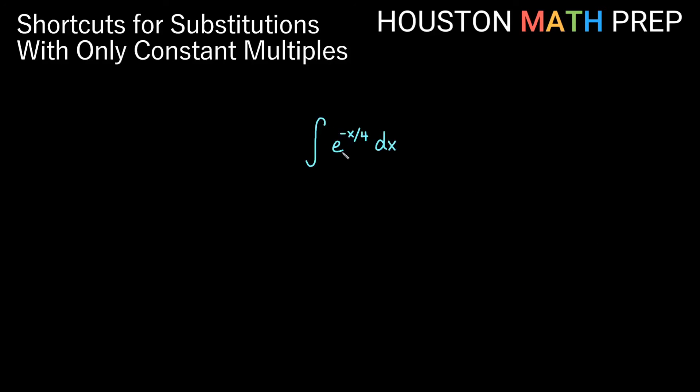Last one here we have again an exponential. So we have the integral of e to the negative x over 4. We want to sort of see this exponent as negative one-fourth times x. So it's just a constant multiple of x. So the antiderivative of exponential would be itself. So we'll get e to the negative x over 4.